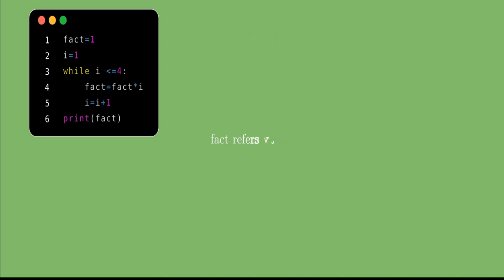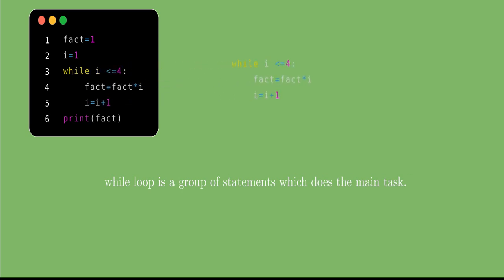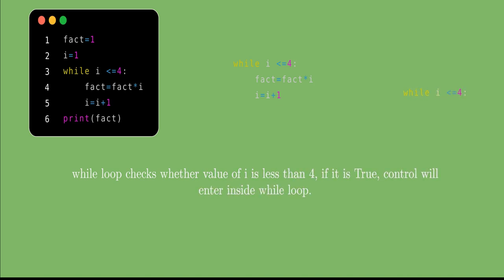Looking at the program: the first line is fact = 1, so fact holds the value 1. The second line is i = 1, meaning i holds the value 1. The third line is a while loop, which is a compound statement that does the main task. Inside it there are two statements: fact = fact × i, and i = i + 1. The condition checks whether i is less than or equal to 4 — if true, control enters the while loop; if false, it does not.